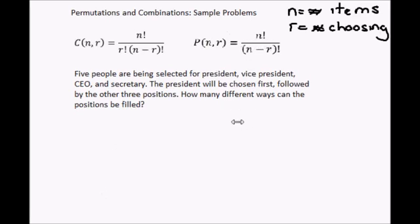So using this permutations formula and the number of people, there are 5 people. 5 factorial divided by n, 5 again, minus r. We are choosing 4 people. And that is going to be factorial.